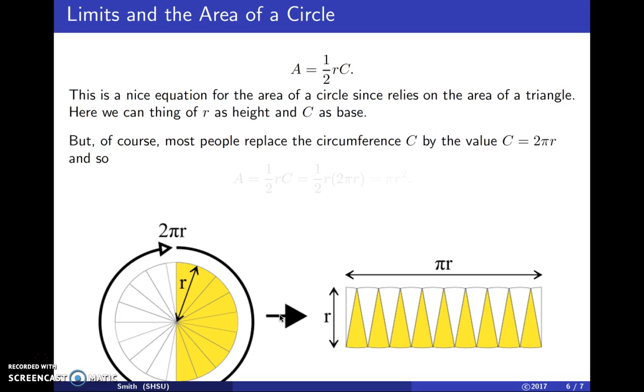But, of course, most people replace their circumference by the value C = 2πr. And so, if I substitute in, instead of saying the area is ½rC, I say the area is ½r(2πr). The twos will cancel, and so we get πr².